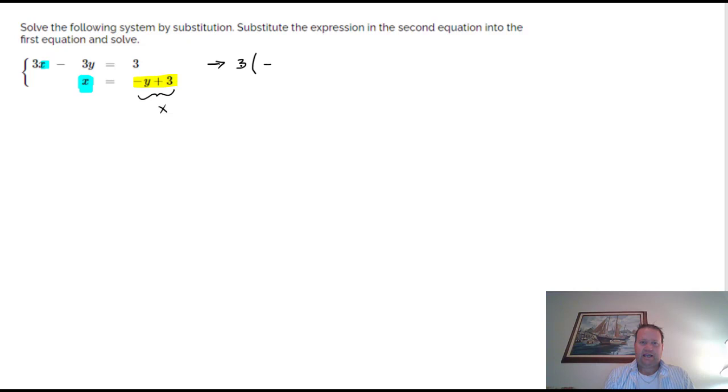So it's going to be 3 times negative y plus 3. That's what x is. And then I'm going to continue on with the rest of my equation minus 3y equals 3.